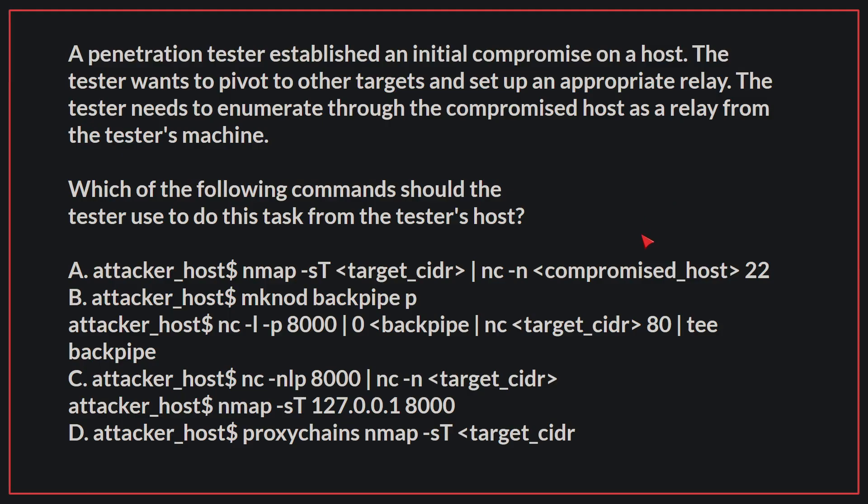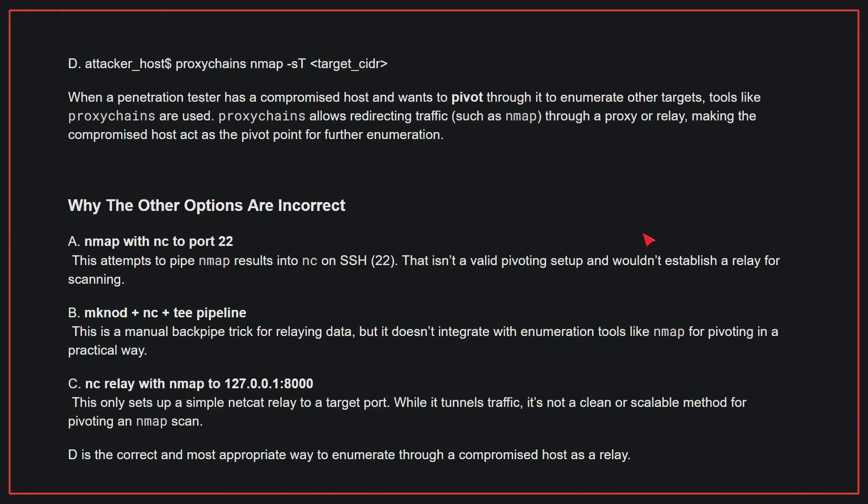The correct answer is D. When a penetration tester has a compromised host and wants to pivot through it to enumerate other targets, tools like ProxyChains are used. ProxyChains allows redirecting traffic through a proxy or relay, making the compromised host act as the pivot point for further enumeration.